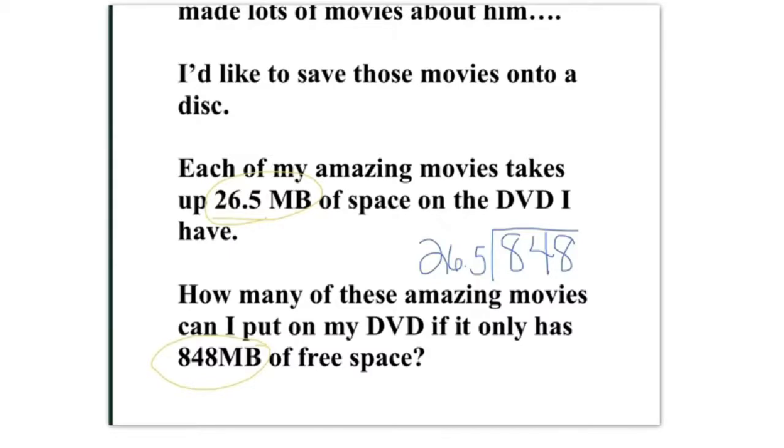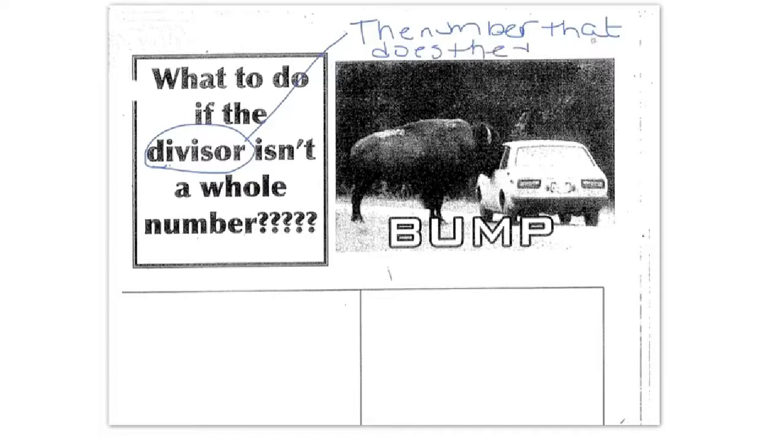Okay, so go ahead and go to your next page. So what do you do if the divisor isn't a whole number? Now remember what our divisor is. Divisor is the number that does the dividing, or how many groups that we want. The number that does the dividing, or how many groups we want. It's also, the divisor is also the number outside the house. I'm going to write that down too. Outside the house. So you can remember which one the divisor is.